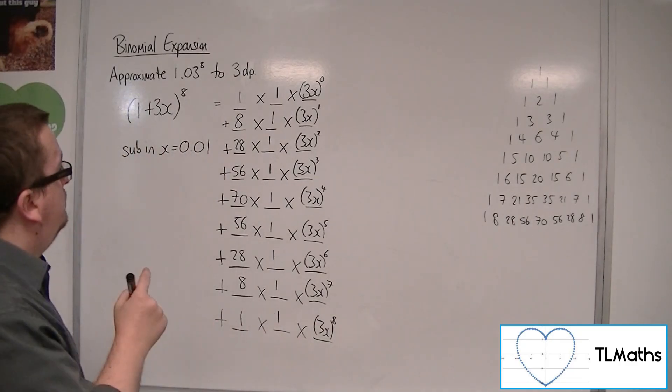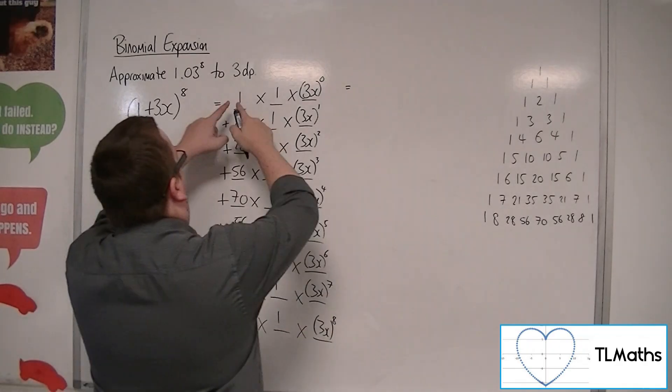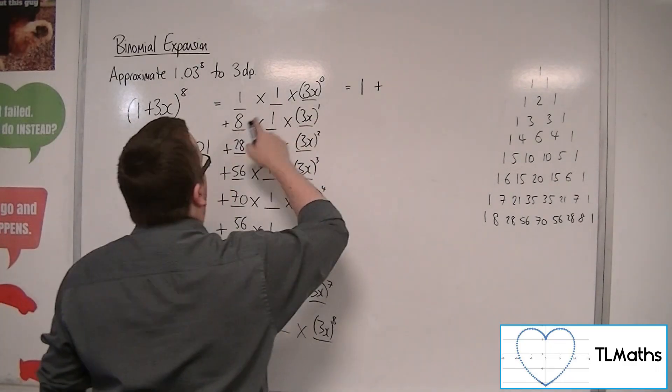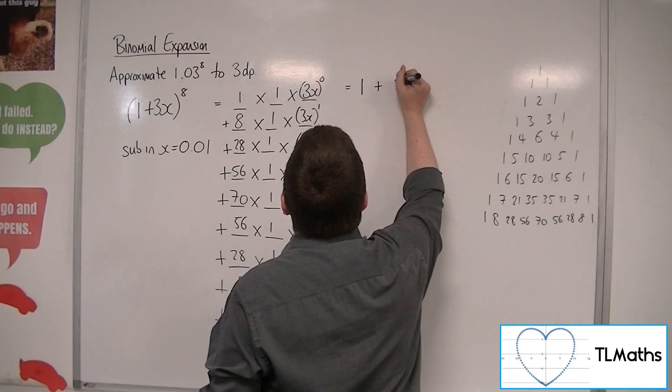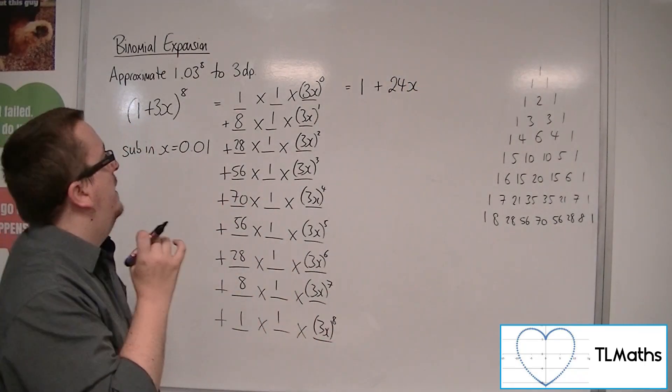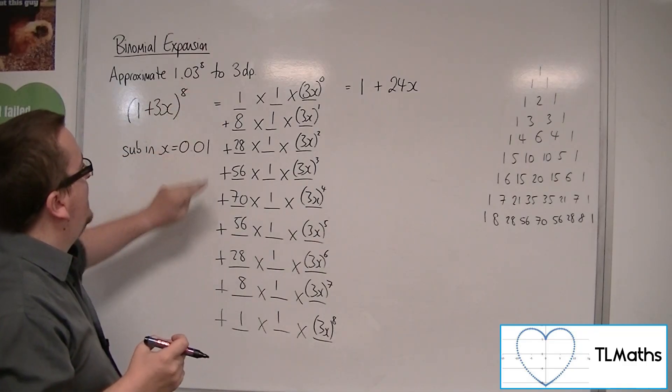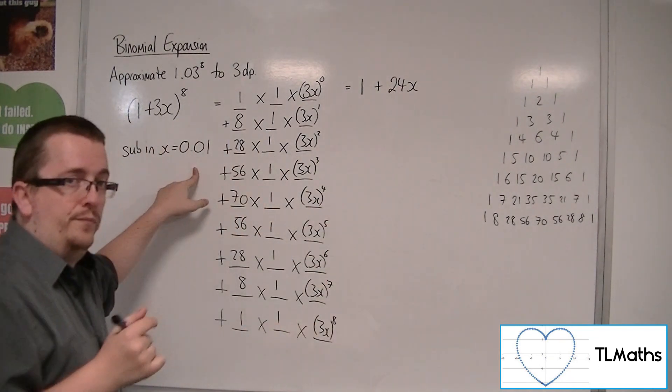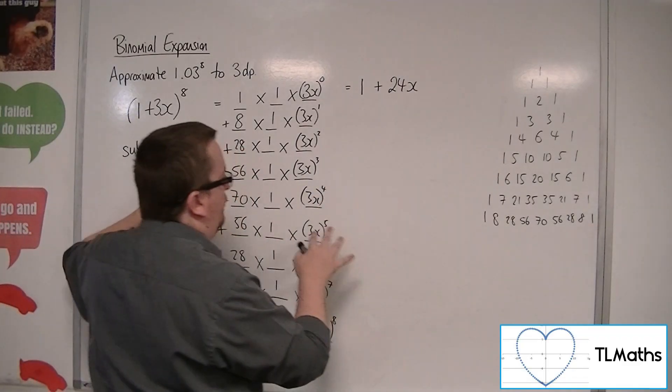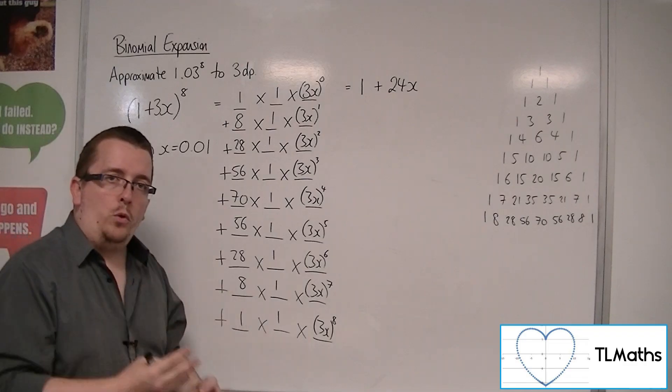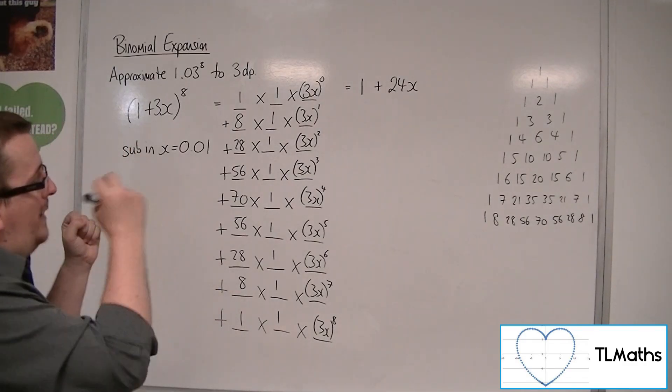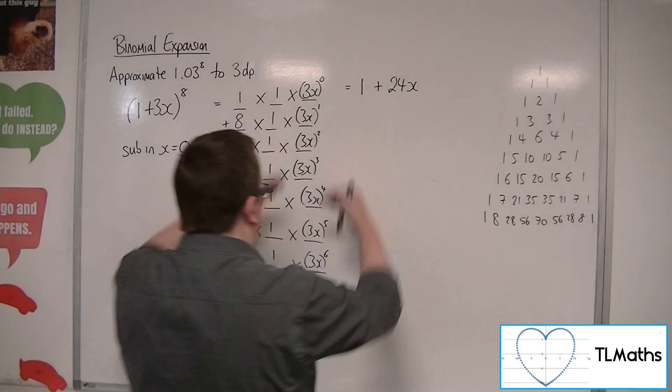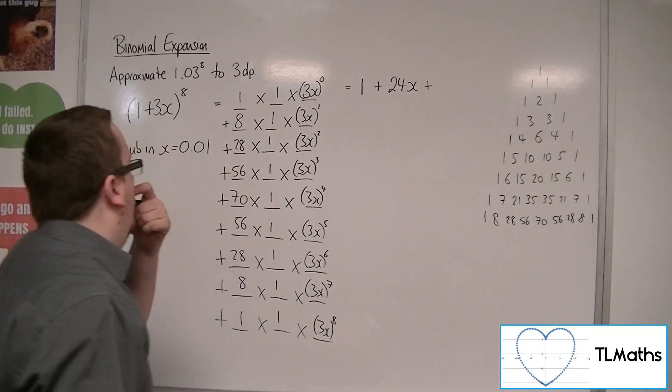Okay, now, what I've got here is 1 times 1 times 1, which will be 1. Plus 8 times 3x. So 8, 16, 24, so 24x. Now, think about this, right? Because if I'm going to 3 decimal places and I'm going to be substituting in 0.01, currently I've got 1.24 there. Okay, 0.01 to the 3 or to the 4 to the 5 is getting very small indeed. And it's going to be adding on a little bit more, a little bit of pieces that I don't particularly need. Okay. So we're not necessarily going to need to go through the whole list here. Let's do a couple more.